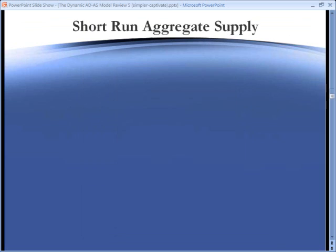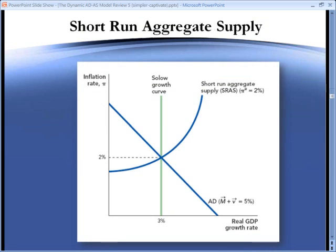To complete our model, we introduce the short-run aggregate supply curve. This is an upward-sloped curve for the usual New Keynesian reasons, that is, sticky prices and sticky wages. If nominal spending is growing at 5%, the Solow growth curve is at 3%, then the inflation rate is at 2%.